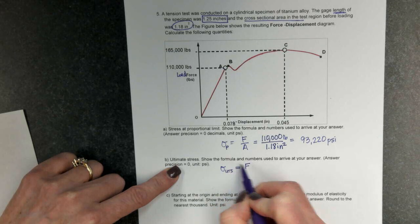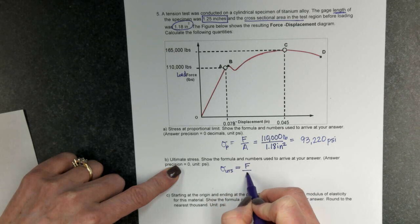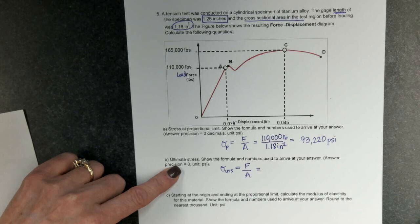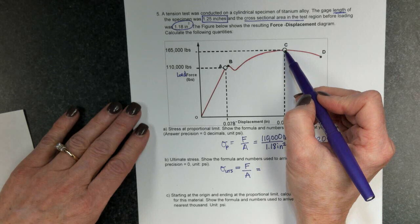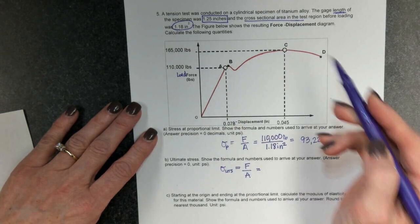That, again, is the force at the ultimate tensile strength, divided by the area. So the force, ultimate tensile strength, as represented by letter C, is 165,000 pounds.